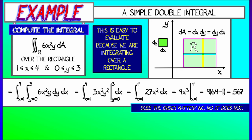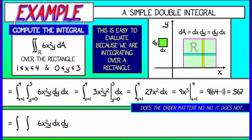Just to verify that the order doesn't matter, let's do it the other way — integrating first with respect to x, then with respect to y. Be careful with the limits: the inner integral now has limits x from 1 to 4, and the outer integral has limits y from 0 to 3. Anti-differentiating with respect to x gives 2x³y. Evaluating that as x goes from 1 to 4 gives us 126y.